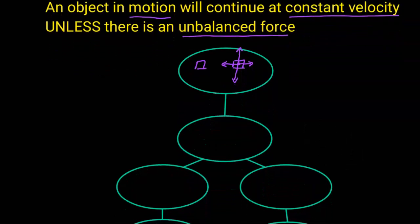In this situation, we say that the object is in equilibrium. And equilibrium means that the net force is equal to zero, so F_net equals zero.